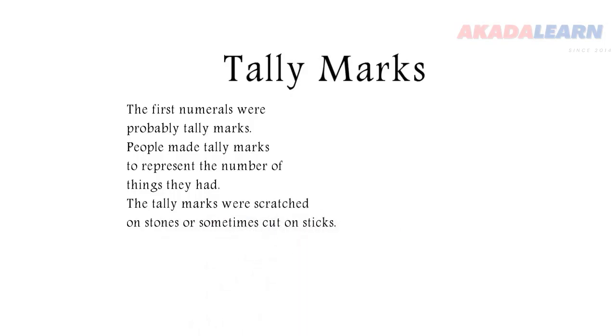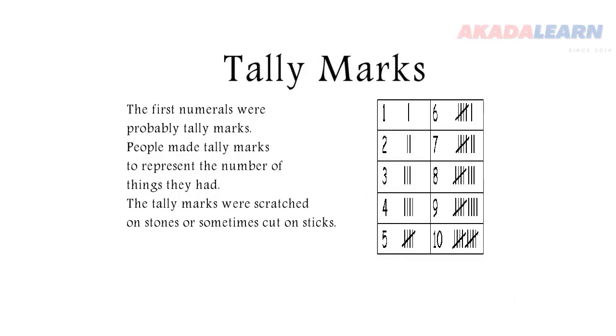We have the tally there from 1 to 10. We can see the number 1, just 1 stroke. Number 2 like that. But when we get to 5, the 5th stroke is used to cross the other ones. 6 is 5 and 1. 7 is 5 and 2. And so on and so forth.